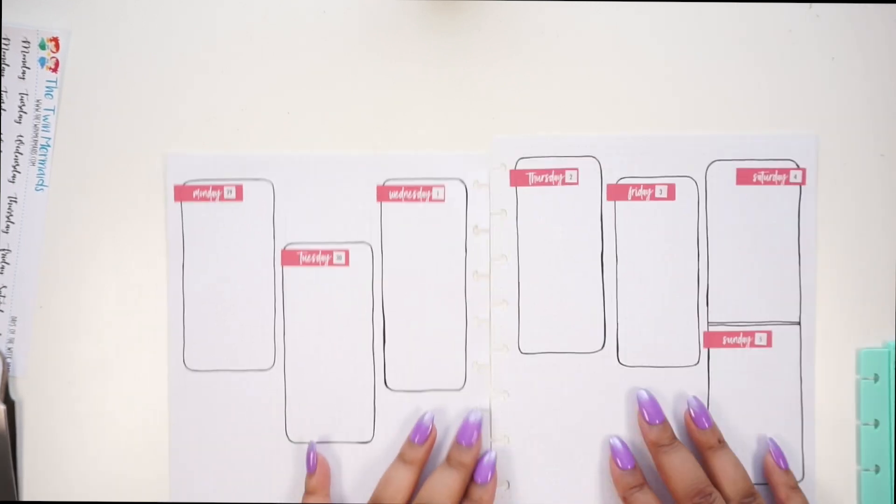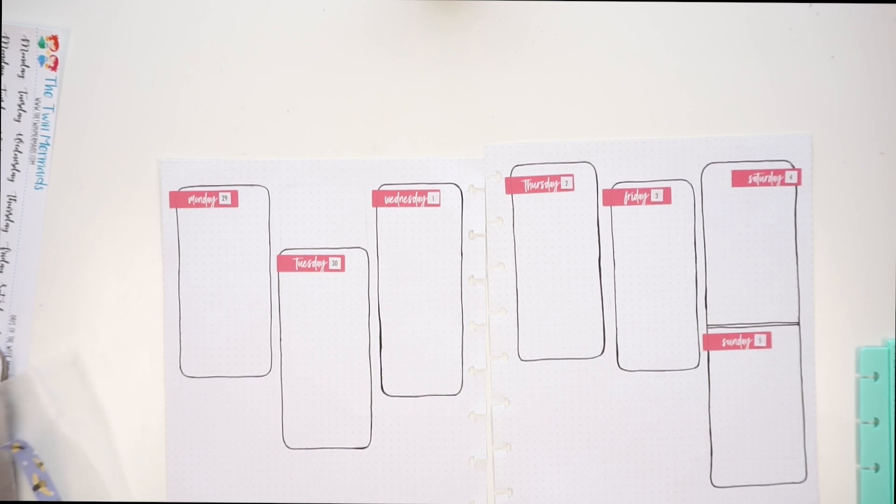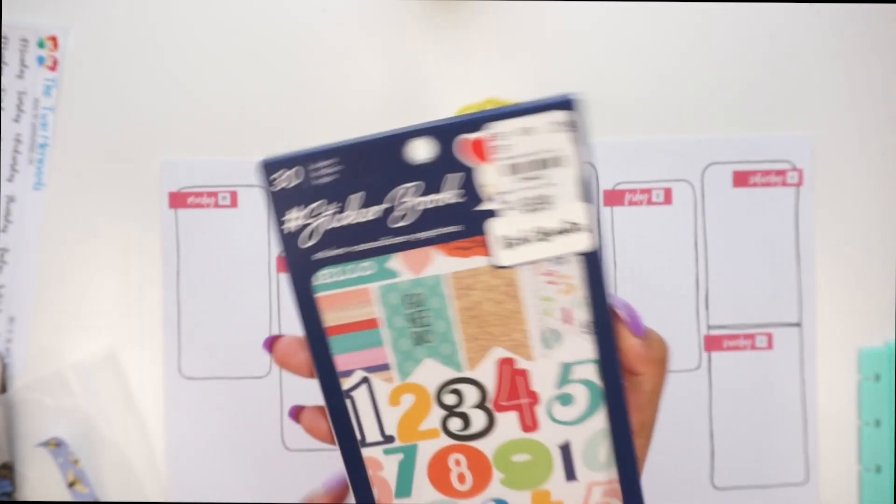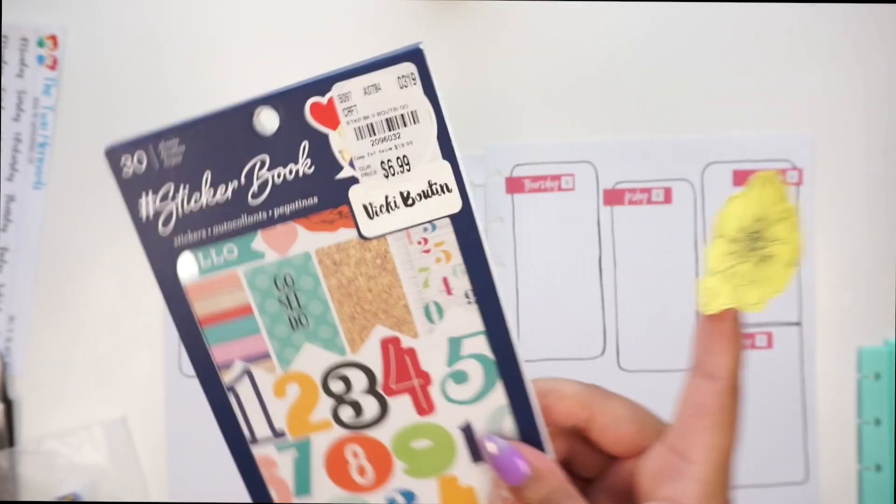All right, so I think I'm going to use this flower here that I got from, let me see, I think I got it from the Vicky book that I just showed you guys. I got stuff everywhere. I think it was in here. Yeah, it was in here. So this is from American Crafts, and this is the Vicky Boutin. I don't know if I'm pronouncing that right.